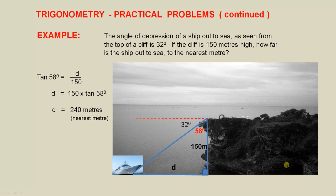Now here is another practical example looking at the angle of depression. The angle of depression of a ship out to sea, as seen from the top of a cliff, is 32 degrees. If the cliff is 150 metres high, how far is the ship out to sea to the nearest metre?